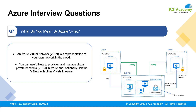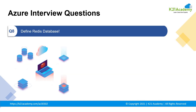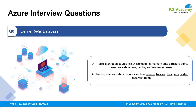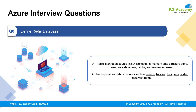Moving to our eighth question: define Redis database. Redis is an open-source, in-memory data structure store used as a database, cache, and message broker. It provides data structures such as strings, hashes, lists, sets, sorted sets with range queries, bitmaps, hyperlogs, geospatial indexes, and streams. Redis is commonly referred to as a NoSQL or non-relational database. In Redis, there are no tables and there is no defined or enforced way of relating data in Redis with other data in Redis.